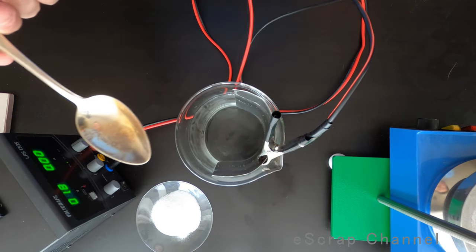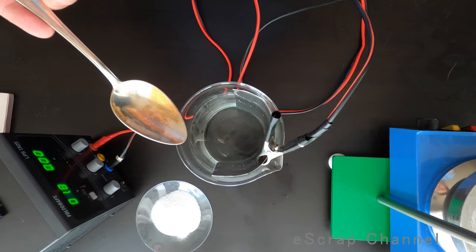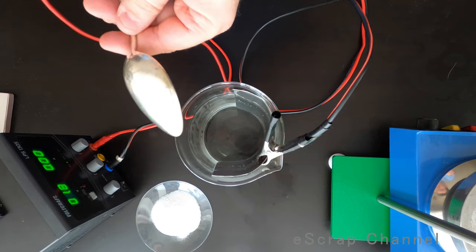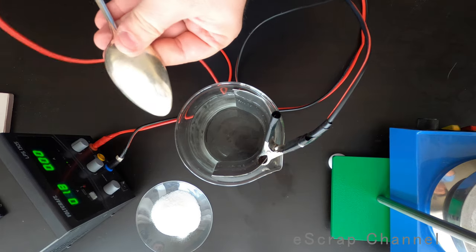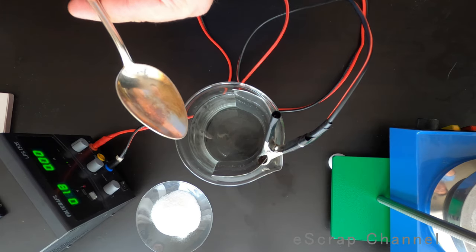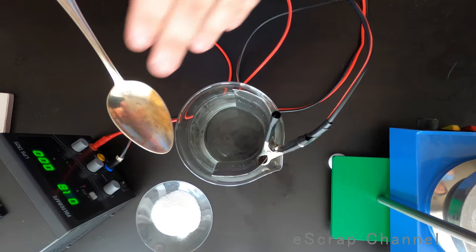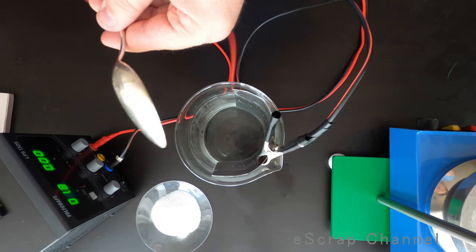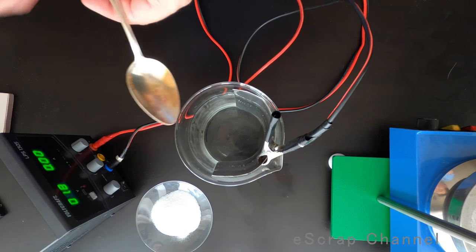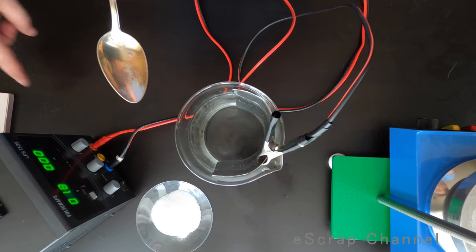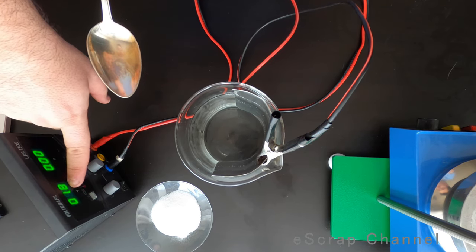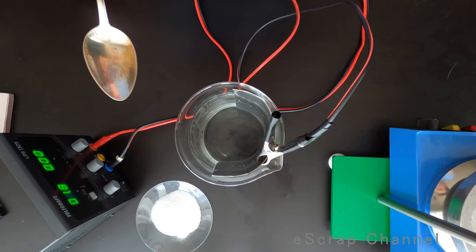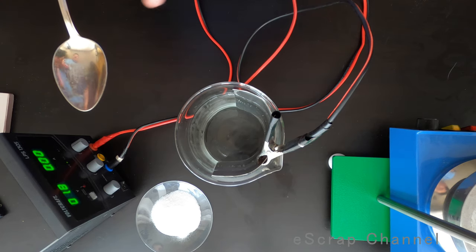So I have this silver spoon, silver plated. It's quite thick silver plating on it and how I will remove this silver from this spoon. I can use reverse electroplating. This is my power supply. It's set on 1.8 volts and I think it's fine.